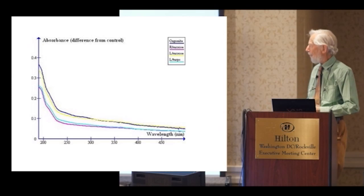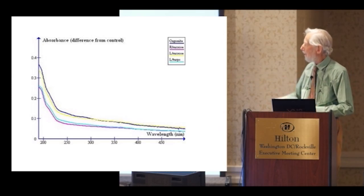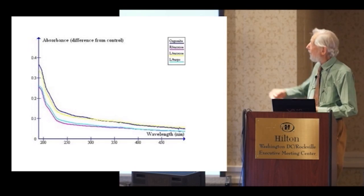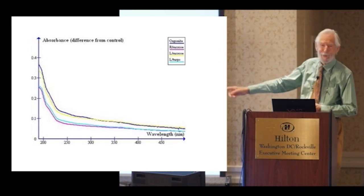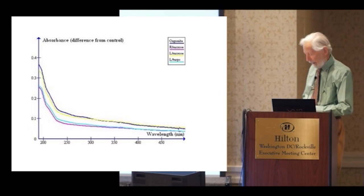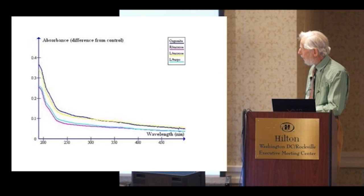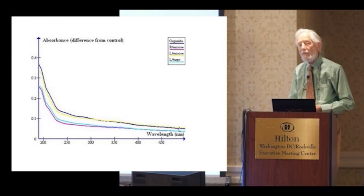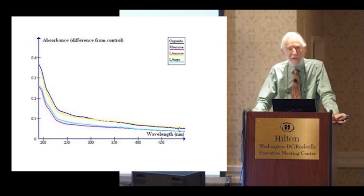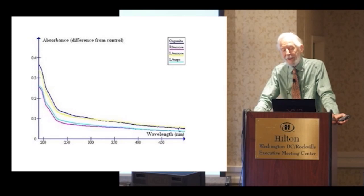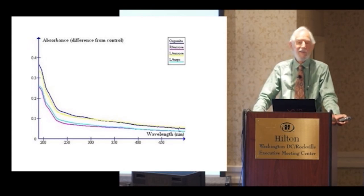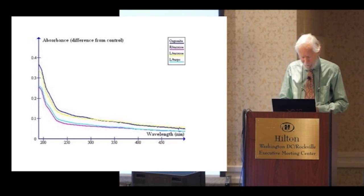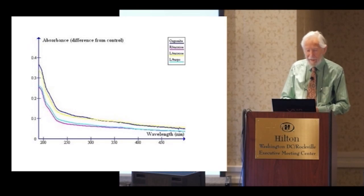This is the absorption spectrum of a number of samples of water. It's difference from control, so the control uncharged water would be just zero all the way along the bottom. Here you have the dark blue line is water being close to orgonite. All the others are charged non-locally with one image, one copy of the image close to the orgonite and the other close to water at about 30 meters distance. I wish I could do more of that, but I can't afford it at the moment.